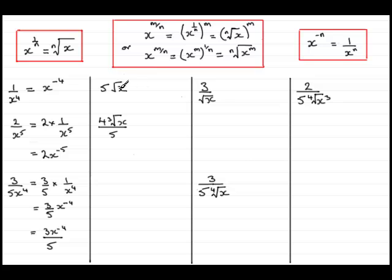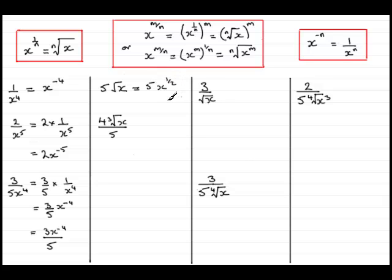Now let's look at 5 root x, introducing square roots into our questions. We can use this result: the square root of x means n is 2, so we've got x to the power 1 over 2. This gives us 5 times x to the power half, or simply 5x to the power half.